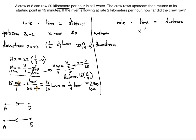Instead of X hours, we use Y minutes for the upstream time, and the remainder for the return trip from B to A will be 15 minus Y minutes. We don't convert minutes to hours; instead, we convert the rate from kilometers per hour to kilometers per minute to stay consistent with the time unit. You can't mix hours and minutes.